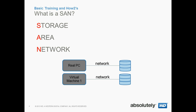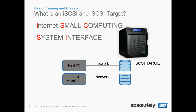SAN stands for Storage Area Network. It's basically a dedicated network that provides access to block-level data storage. Think of it as a disk for your PC or virtual machine that's on the network. And iSCSI is the standard by which we use to create that network.